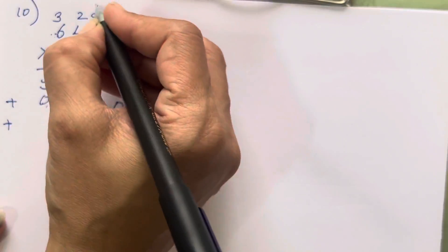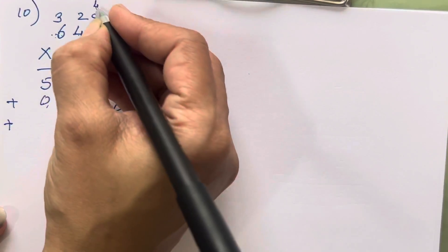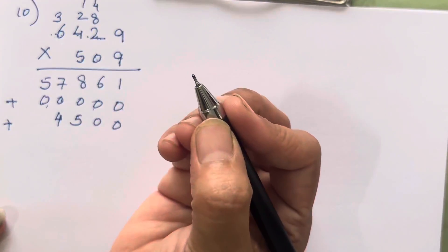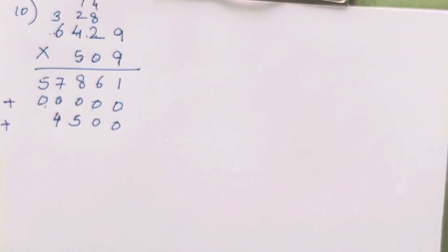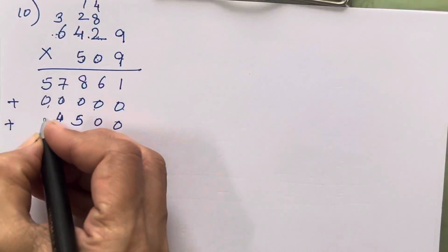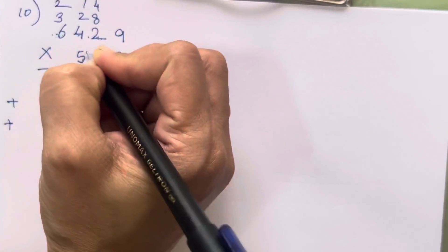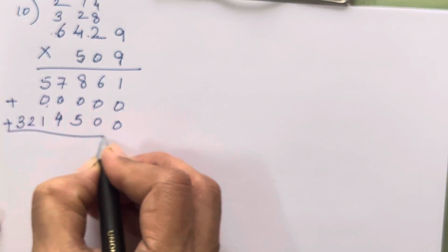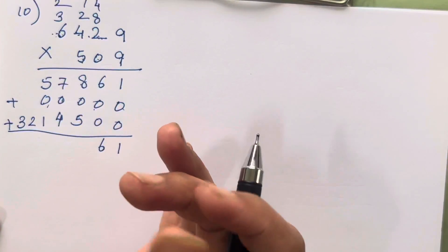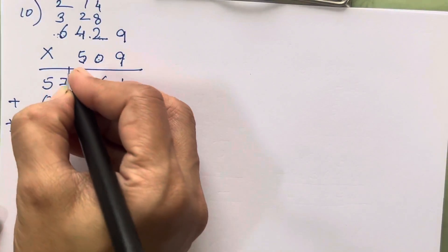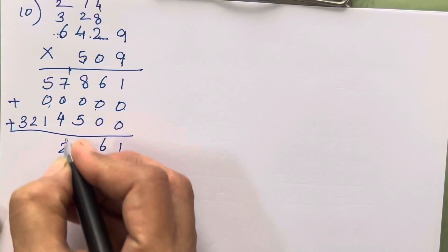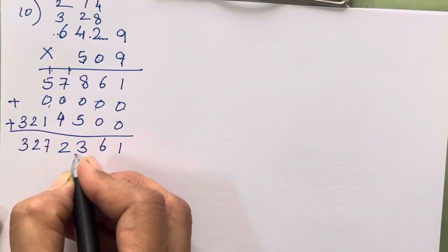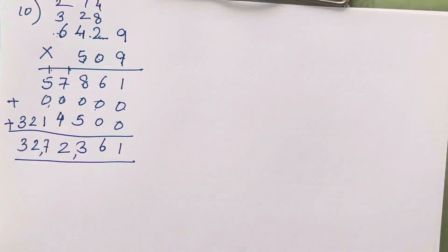Now for the next number 2 zeros first. 5 nines are 45. 5 twos are 10, 10 plus 4, 14. 5 fours are 20, 21. 5 sixes are 30, 31, 32. 1, 6, 8, 9, 10, 11, 12, 13. 8, 9, 10, 11, 12. 6, 7, 2 and 3. So this is your answer.